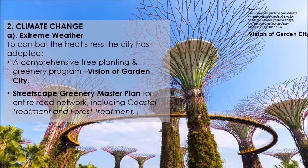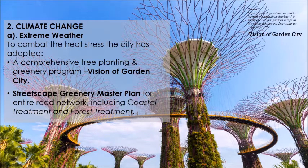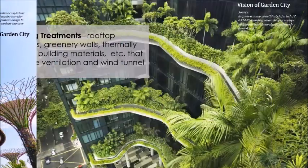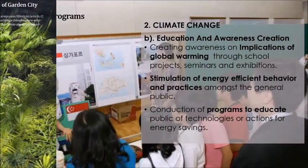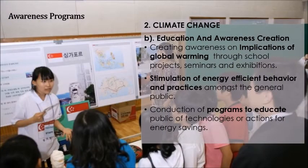To combat heat stress from climate change, the city adopted a comprehensive tree planting and greening program with a vision of Singapore as a green garden city. A streetscape greenery master plan for the entire road network including coastal and forest areas was put forth. Building treatments such as rooftop gardens and wind tunnel effect mitigation were promoted. There was also education and awareness creation on the implications of global warming.